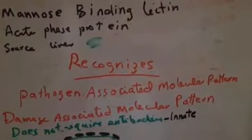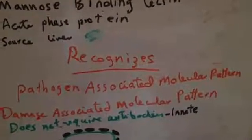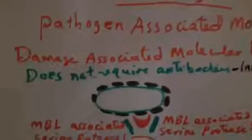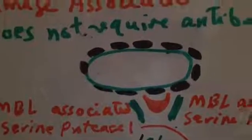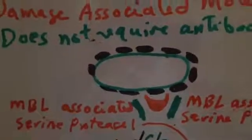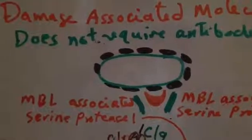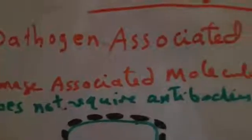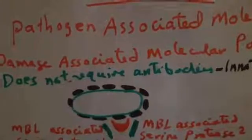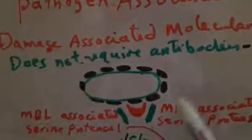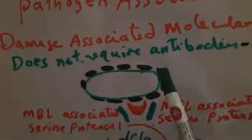These pathogen-associated molecular patterns are on the surface of different microorganisms, for example bacteria, viruses, fungi, and other infecting agents. As can be seen here, these are the mannose residues or pathogen-associated molecular patterns, and these are recognized by the MBL.